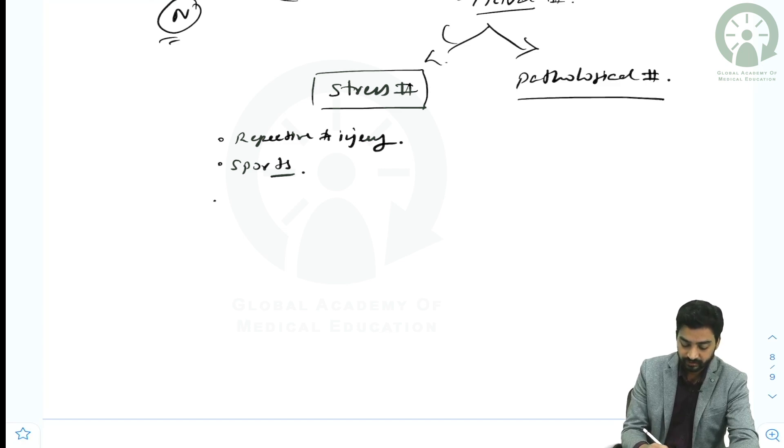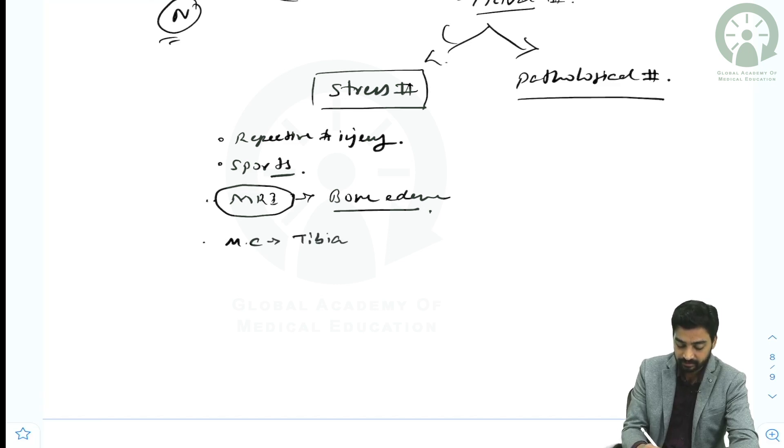How do we investigate? The best investigation is to do an MRI, which will show the bone edema portion. A few examples of stress fracture: the most common site is first of all the tibia, the shin bone.